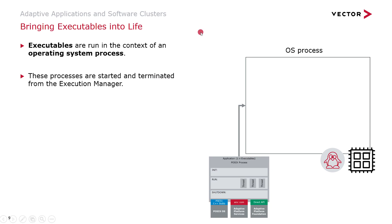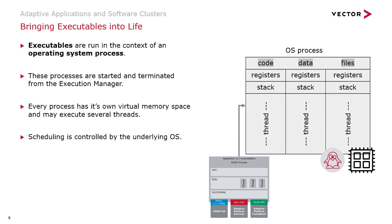Processes belonging to our adaptive application are started by the adaptive platform, more precisely by the execution manager. The OS loads the process into virtual memory and schedules the main thread for execution. The process business logic may spawn more threads to provide the application behavior. Note that the scheduling of the threads is mainly under control of the underlying OS. The process is a top-level element of the execution manifest and references the executable.